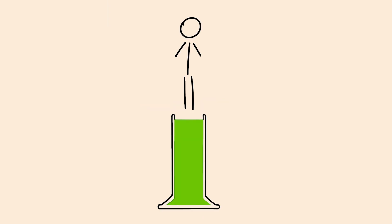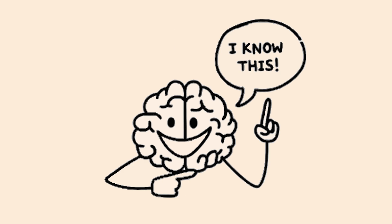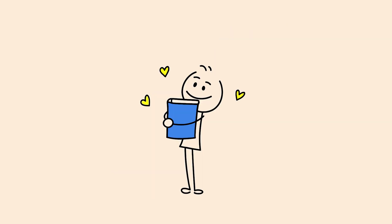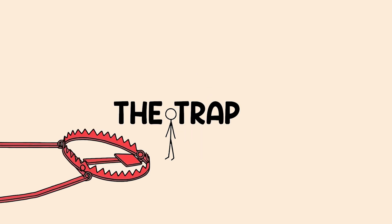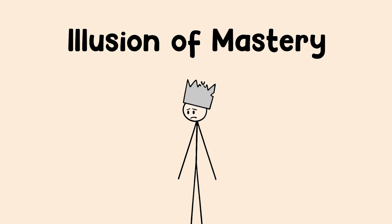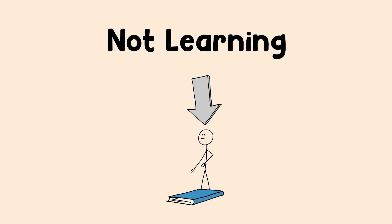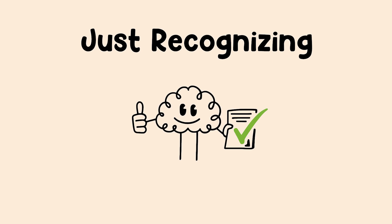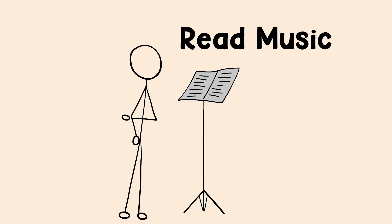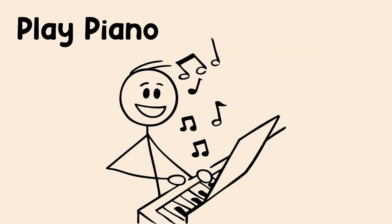They feel productive. When you reread a page, your brain goes, 'oh yeah, I recognize this stuff.' It gives you a warm, fuzzy feeling of familiarity. But that's the trap. It's what scientists call the illusion of mastery. You're not actually learning the ideas. You're just getting really good at recognizing the words on the page. It's the difference between being able to read the sheet music and being able to actually play the piano. Two totally different skills.